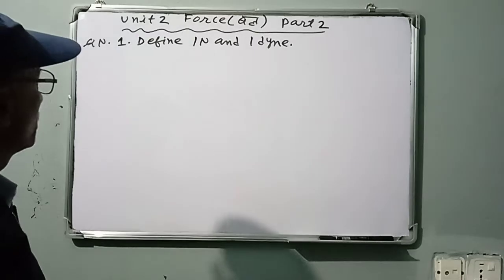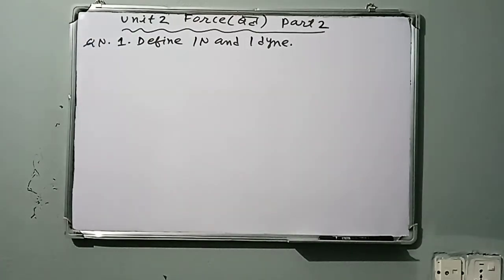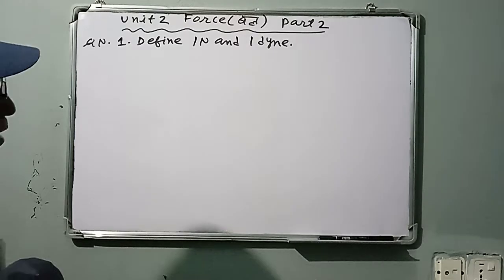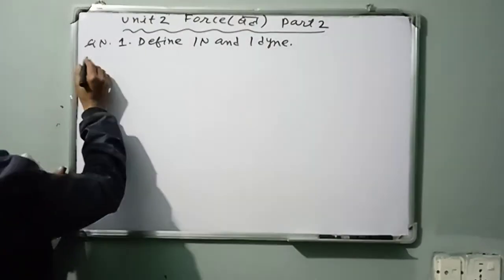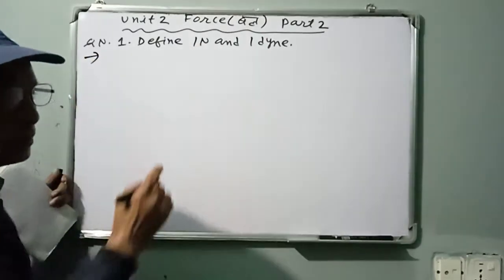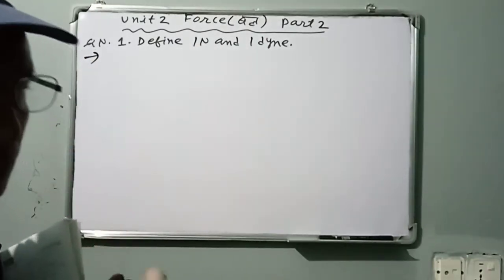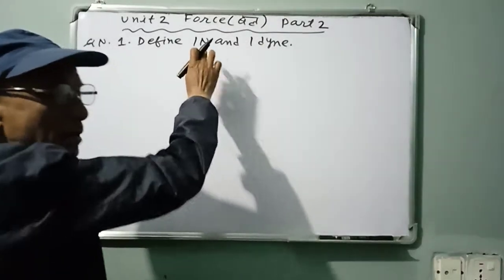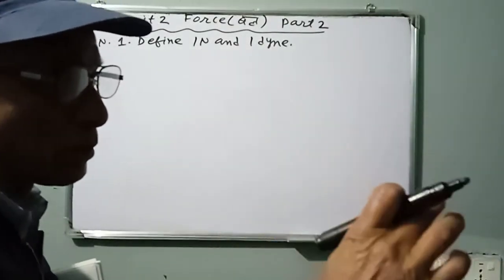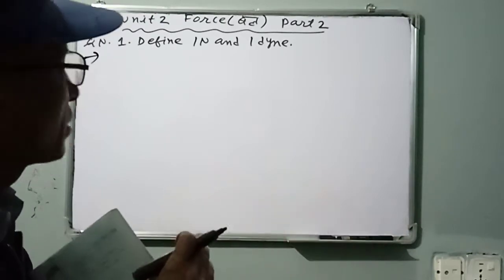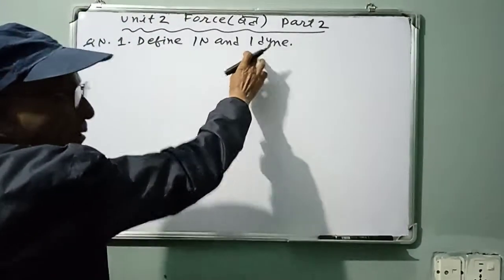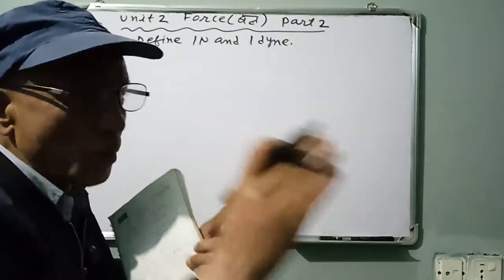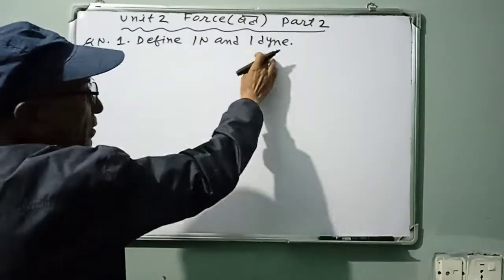Class 9, force and motion part 2. I've already written some questions. Today we continue: define one Newton. One Newton is the force needed to produce an acceleration of one meter per second squared on a body of mass one kilogram.